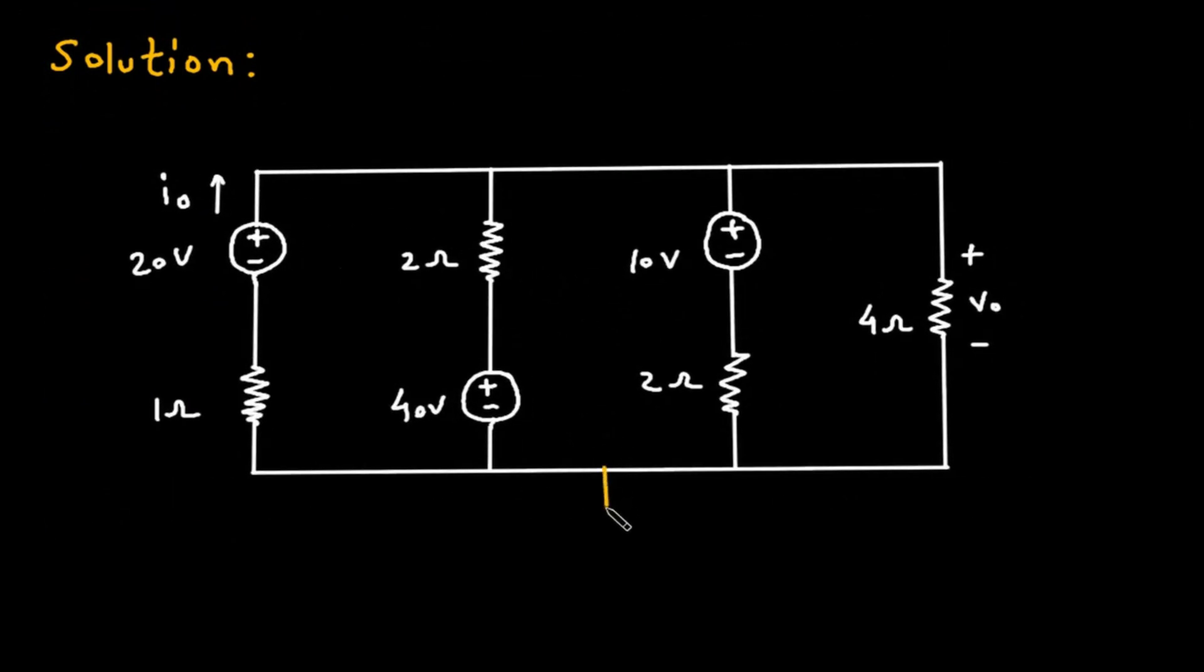Now let's assume this is the reference node with zero voltage. Let's say this is node 1 with voltage V₁. Let's say this is current I₁, this is current I₂, and this is current I₃.